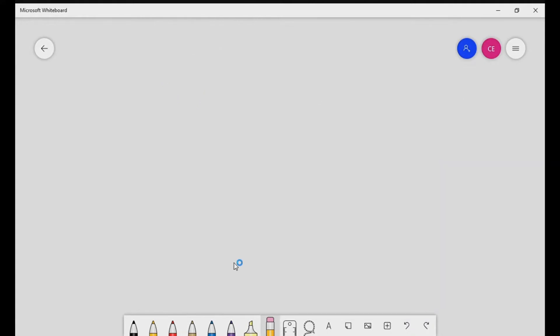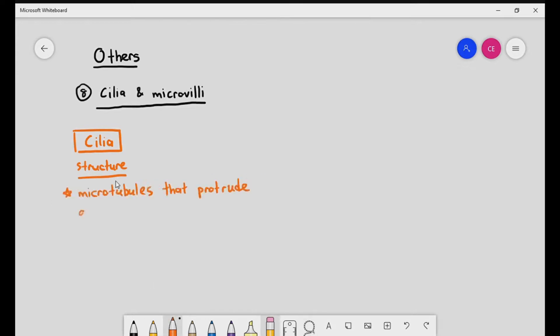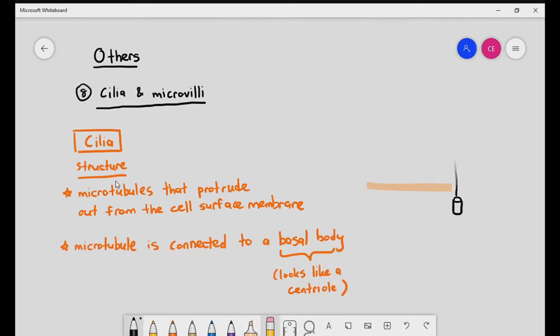The other things we are going to be talking about in the animal cell are the things known as cilia and microvilli. Cilia themselves are just microtubules that protrude out from cell surface membrane. Cell surface membrane meaning the membrane covering the surface of the cell. Microtubules are connected to a basal body, which looks a little bit like a centriole. The peach color line represents the cell surface membrane. It separates the cytoplasm from outside the cell. You can see a cylindrical structure forming the basal body, which is connected to a microtubule. That microtubule is the cilia.